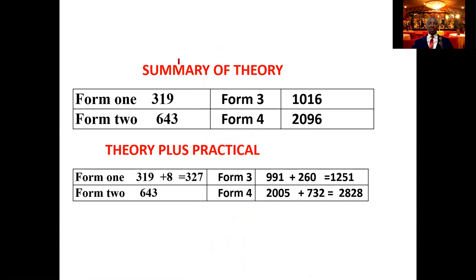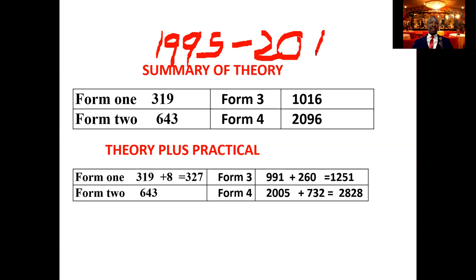I want to show you the summary of how the exam has been set for the last 25 years — from 1995 to 2019. The total marks set from Form 1 theory over those 25 years is 319 marks. Form 2 contributed 643 marks. Form 3 contributed 1,016 marks. And Form 4 contributed 2,096 marks. That is theory alone. When we combine theory and practical: Form 1 had one practical question from the cooling curve worth 8 marks, giving a total of 327 marks. Form 2 had no practical, so it remains 643 marks.